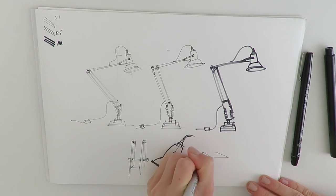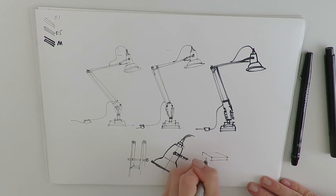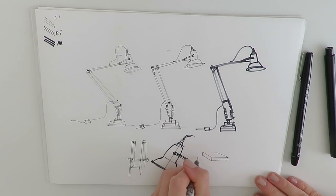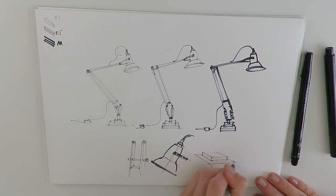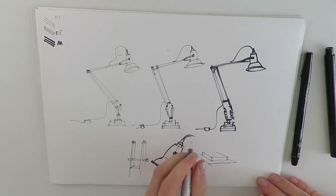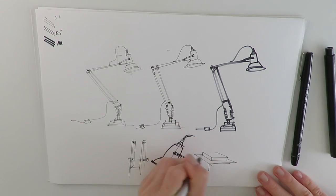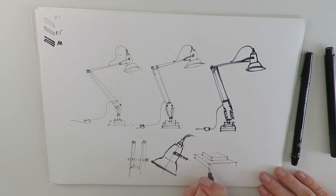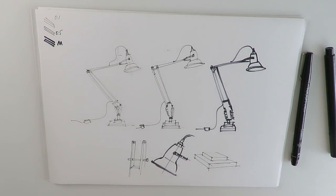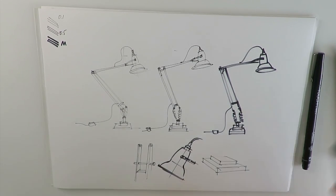To, for example, outline, make an outline with a thicker pen and make some details and to show textures with a thin liner. And you will see that this combination of lines, this play of lines will make your sketch more attractive, more confident and interesting.